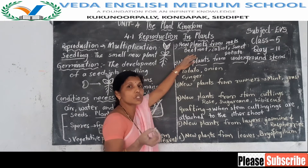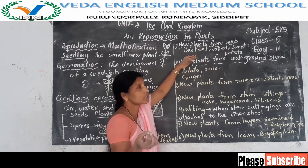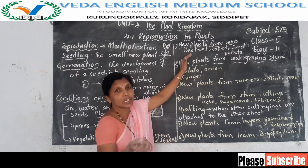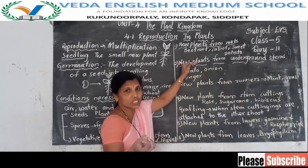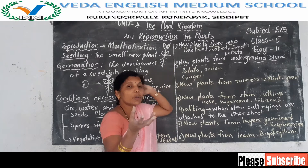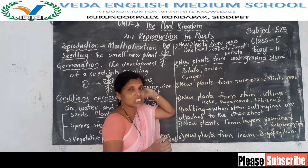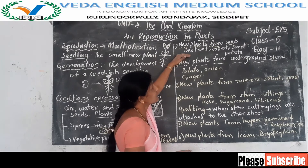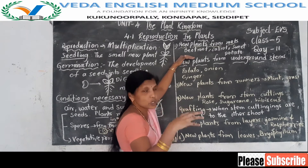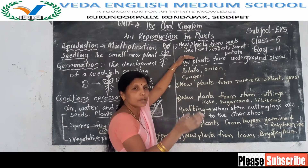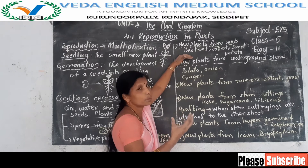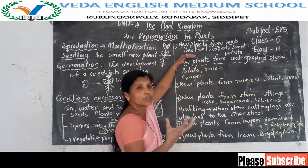Which plant roots do we eat? Beetroot, carrots, sweet potato, and turnip — those are the roots we eat. So from these roots, a new plant develops. Take these roots and plant them in the soil, and new plants will develop from them.